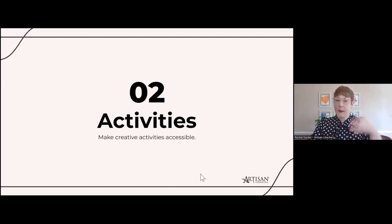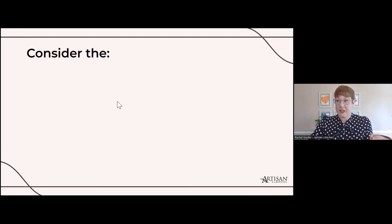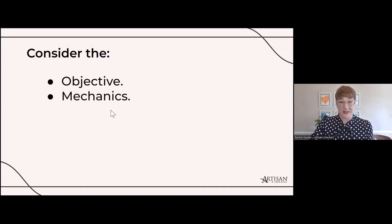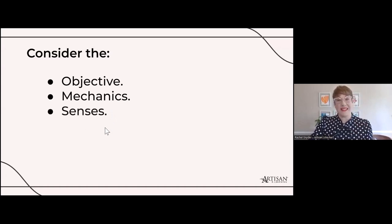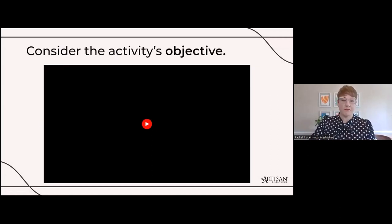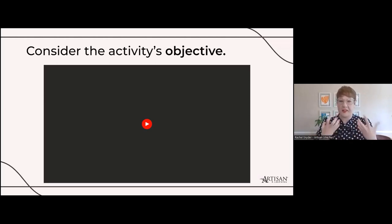When I come up with an activity, I consider the objective — what do I want the learner to do? The mechanics — how does it work, which is really where a lot of accessibility comes in. And the senses — what senses does a learner need to be able to complete that activity? For the activity's objective, ask yourself: am I teaching something new? Is it a knowledge check? How will critical thinking be activated? Those good instructional design questions that we always start with.